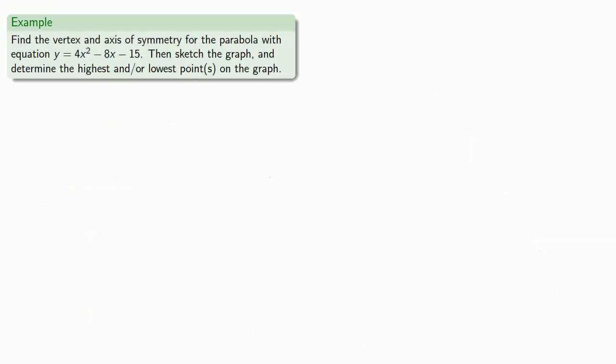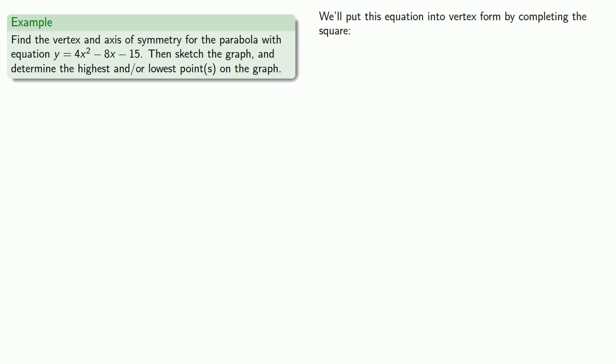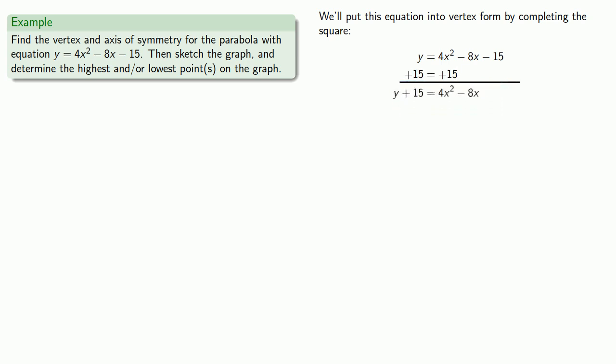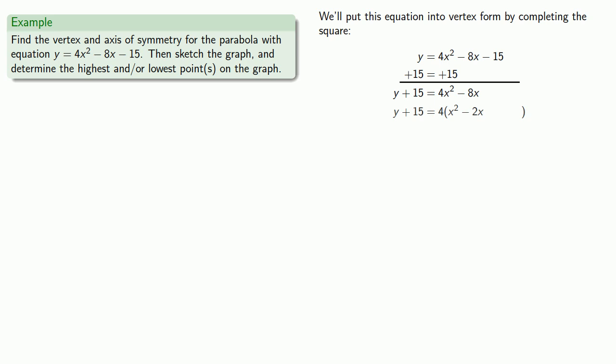What about a quadratic equation that is not in vertex form? If the equation were in vertex form, it would be easy to read off the transformations, but it's not. We'll put this equation into vertex form by completing the square. First, we'll get rid of the constant term by adding 15 to both sides. Then we factor a 4 out of the terms on the right-hand side. We complete the square inside the parentheses by adding 1 and then subtracting 1.